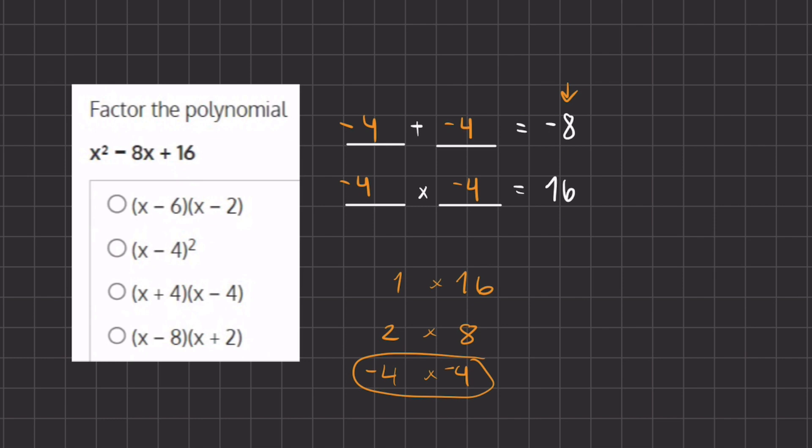Alright, so our multiples are going to be negative 4 and negative 4, so we have x minus 4, and we have x minus 4, and we can simplify this because they are the exact same. So we can write it as x minus 4 squared, which will be our final answer, which corresponds with answer B.